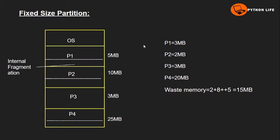In fixed size partition, the size of each partition can be the same or different. For example, partitions can all be 5MB each. Now suppose we have P1 process 3MB, P2 process 2MB, P3 process 3MB, and P4 process 20MB. These four processes need to be stored in main memory.